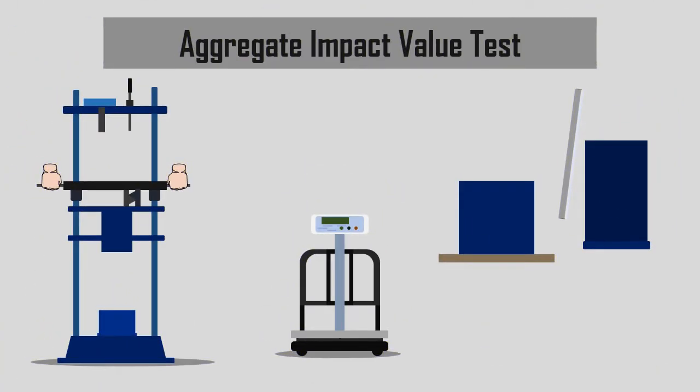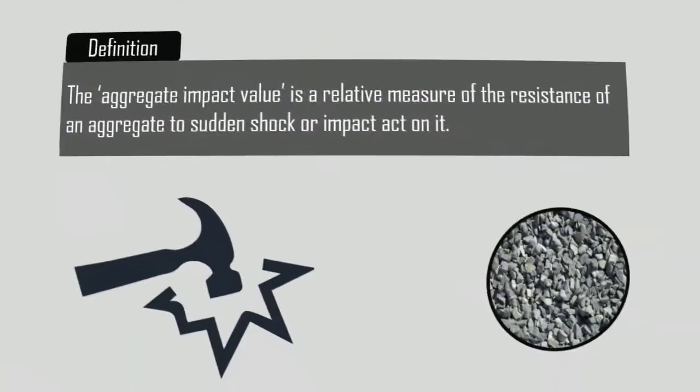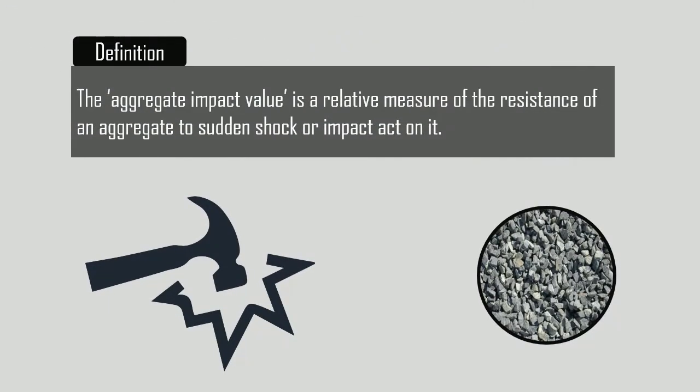Aggregate Impact Value Test. The Aggregate Impact Value is a relative measure of the resistance of an aggregate to sudden shock or impact act on it.